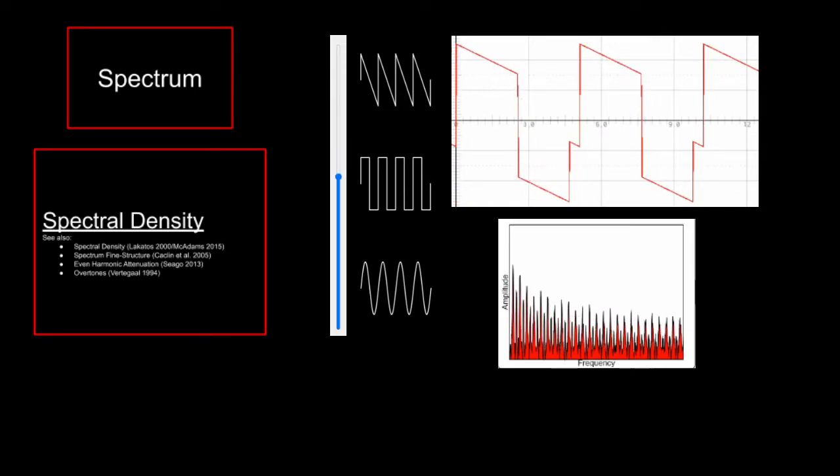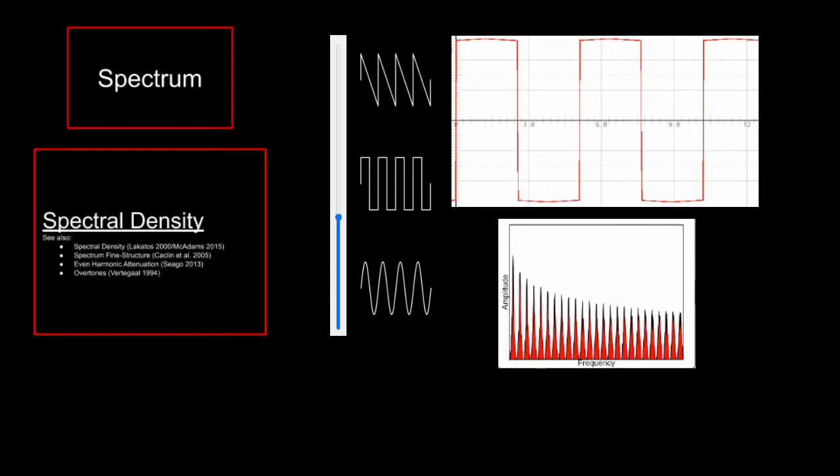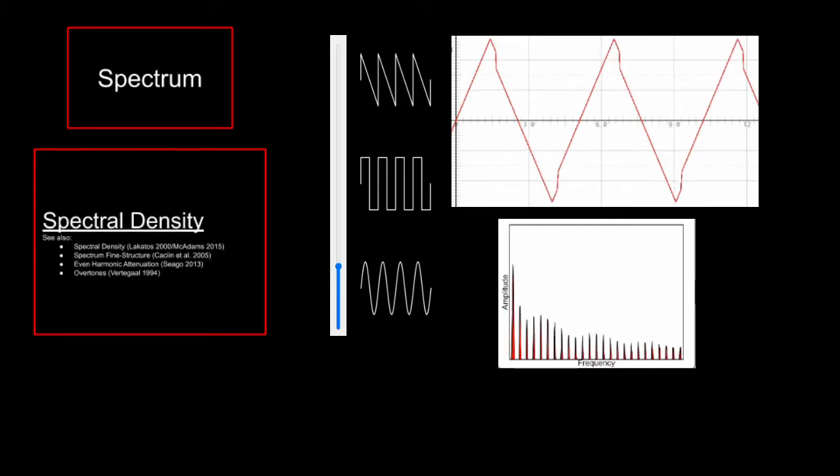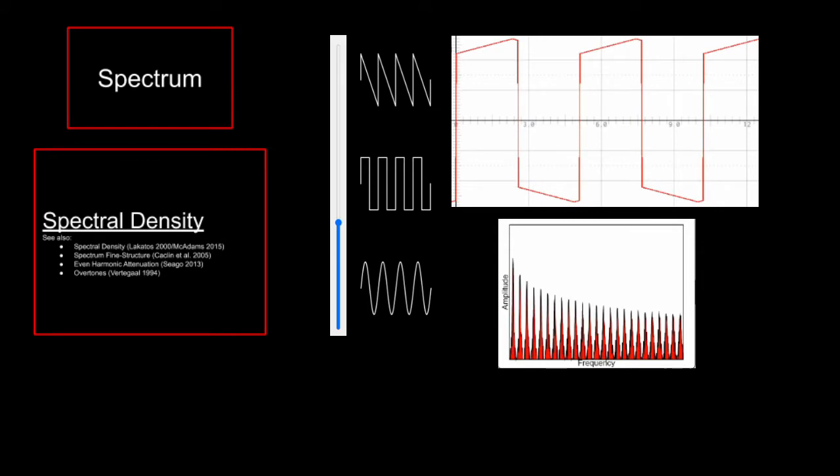But what do these shapes have to do with spectral density? Well, here's a graph of the wave's frequency spectrum, which is where the dimension gets its name. If you don't know what a frequency spectrum is, you're certainly not alone in that. But today I want to try to show you what it is, rather than tell you. As you can see, the spectrum gets more and more dense as we progress from a sine to a square to a saw.